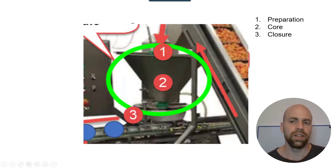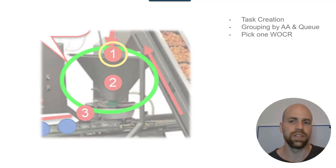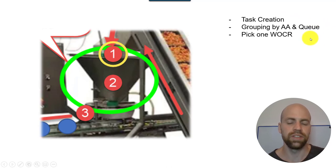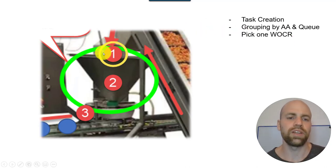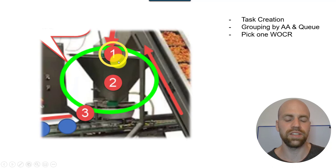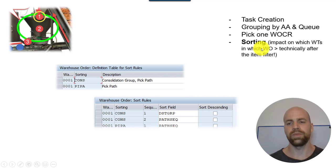Now we look at the core part. To summarize what we did so far — this was the preparation: the steps before and at the beginning of warehouse order creation, including task creation, grouping by activity area and queue, and picking one warehouse order creation rule. Now let us assume there is only one. This is at the beginning of our funnel — step one. The last thing we do here at the beginning, at least logically, is the sorting. We sort all warehouse tasks before we try to create warehouse orders.